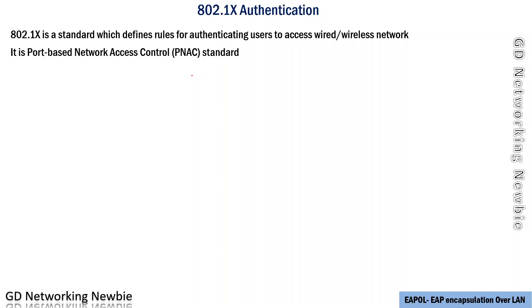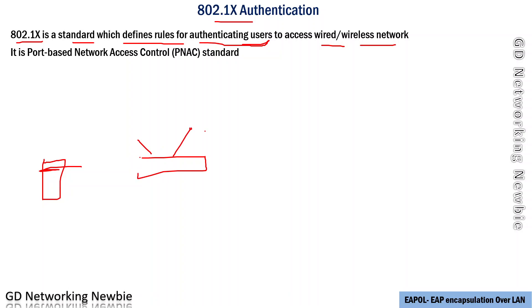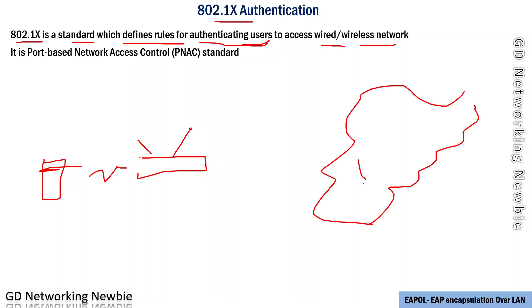Hi everyone. In this video we are going to discuss 802.1x authentication. 802.1x is a standard which defines rules for authenticating users who want to access a wired or wireless network. For example, there is a user with a smartphone and an access point, and the user wants to access the internet using that access point. We want to authenticate users to determine whether they are legitimate or not, and for that we use 802.1x.